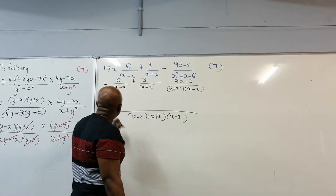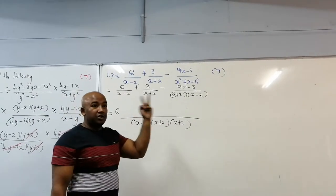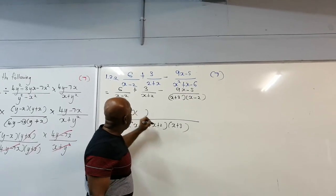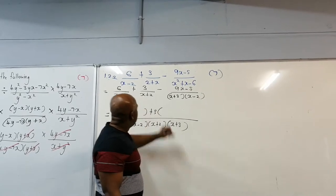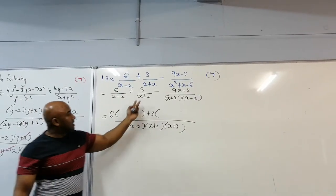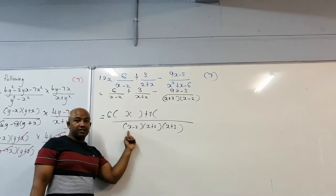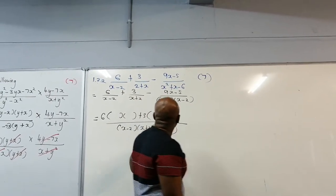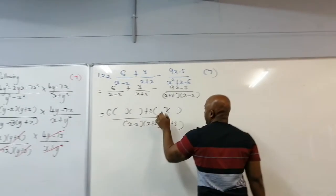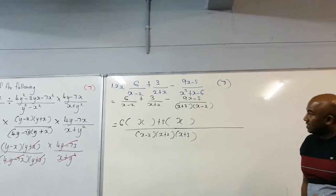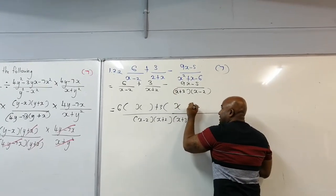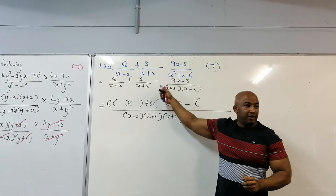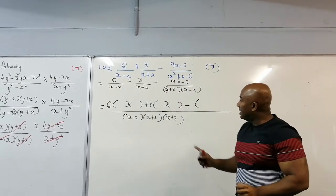This 6 needs to be multiplied by 2 factors — x plus 3. The 3 also needs to be multiplied because there's an x plus 2 and x minus 2 missing, so that's 2 factors. Now here you need to be careful — this is where students make a mistake. This minus sign means you must open a bracket, because the negative is going to affect every single term. Be careful — that's the common mistake students make.